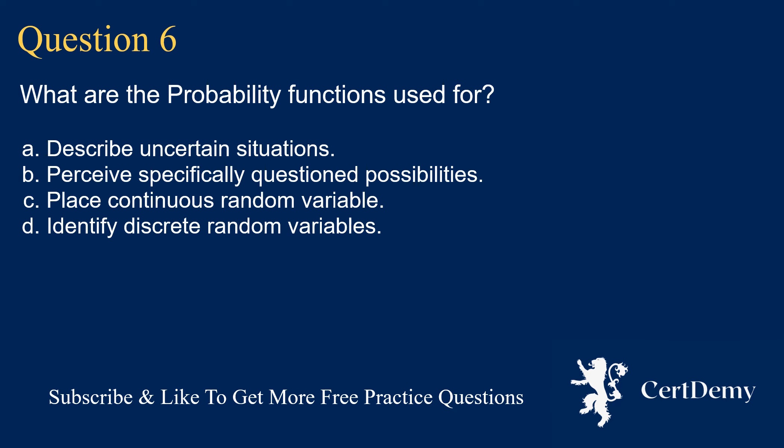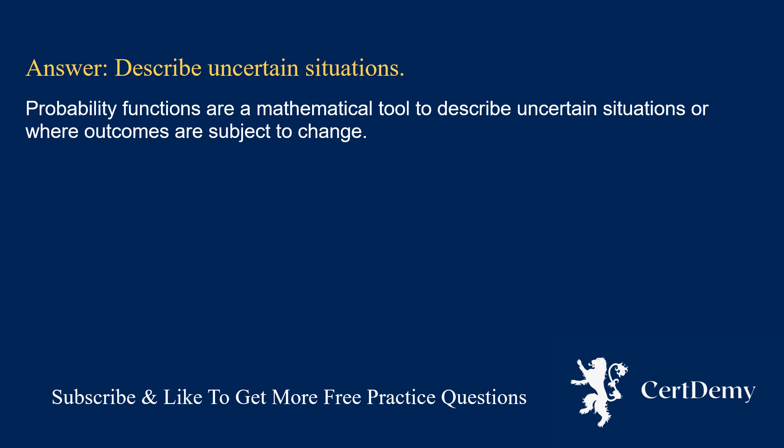Question 6. Identify the qualified private charities. Options: veterans organizations; government entities; fraternal orders; private non-operating foundations. The answer is: describe uncertain situations. Probability functions are a mathematical tool to describe uncertain situations or where outcomes are subject to change.